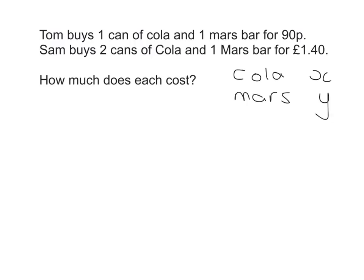Then if you look at Sam first of all, I could write the equation that Sam buys two cans of cola, so that's 2x, plus one Mars bar, so that's one y, and he pays £1.40. If I then look at what Tom buys, he buys one can of cola and one Mars bar and it costs him 90p. So he buys one cola, one Mars bar, that's x plus y equals 90p, we'll put as 0.90 to keep the units the same as the top one.